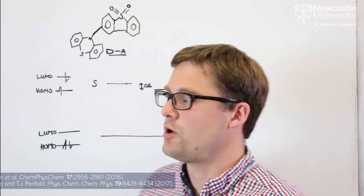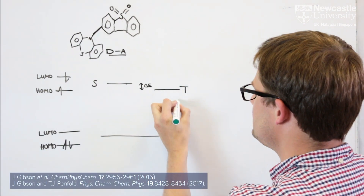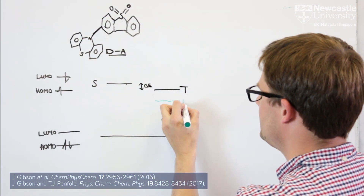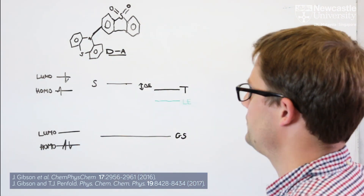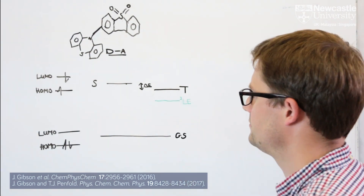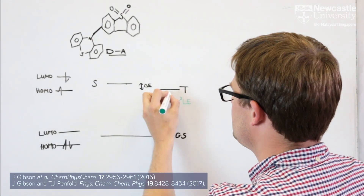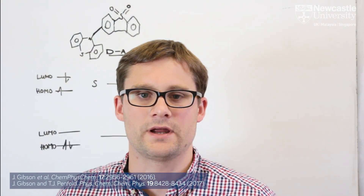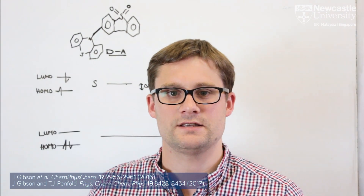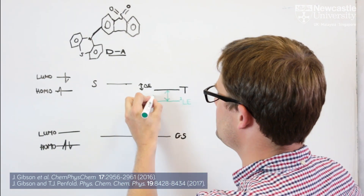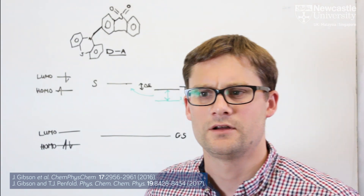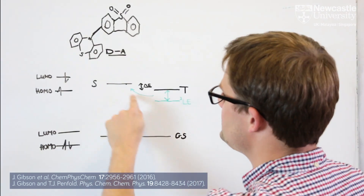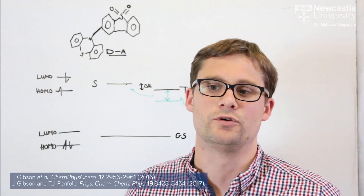In our quantum dynamics work, we found that for this molecule there is also another triplet state which lies below the two charge transfer singlet states. This is a locally excited state based on the donor group — also a triplet state. These two triplet states can couple by what's called vibronic coupling, and this vibronic coupling mixes the character of the two states and opens up a channel for efficient transfer to the singlet states. By including this lower-lying triplet state in the calculations, the rate of conversion into the singlet states increased by four orders of magnitude.